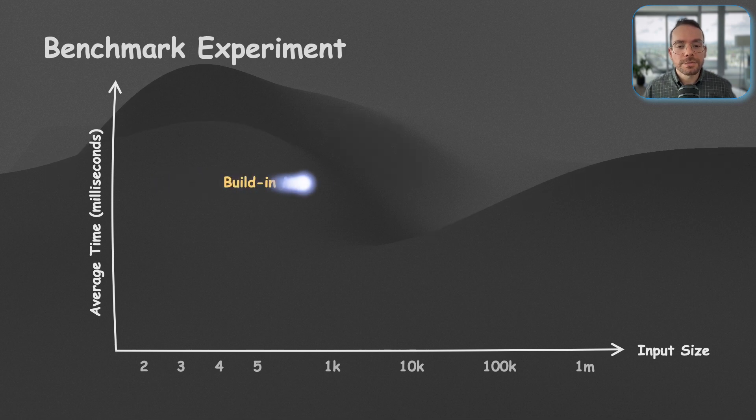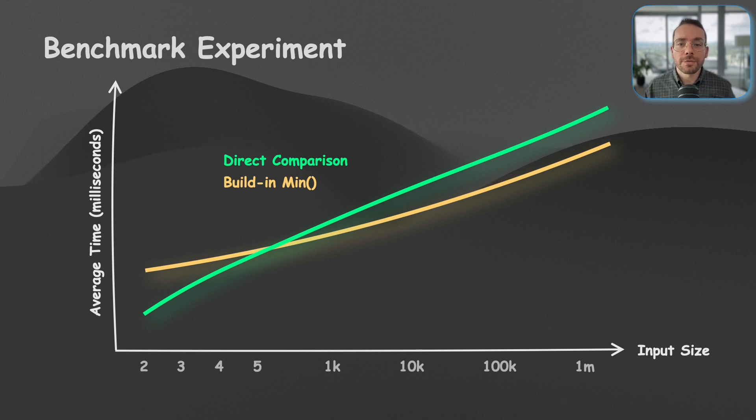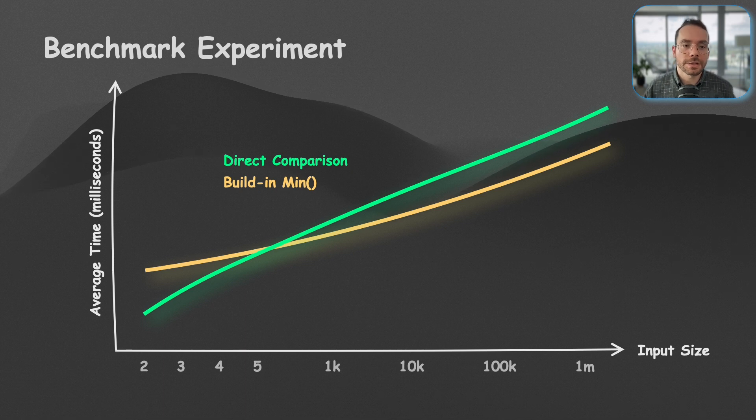If you look at this result, as the size of the input increases, the complexity of both approaches increases. But the direct approach is actually a lot faster for small inputs, while the built-in function becomes more efficient as the input size grows.